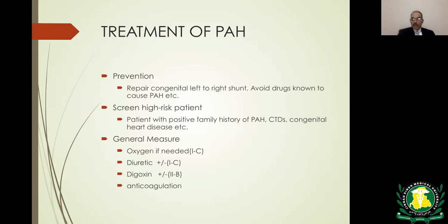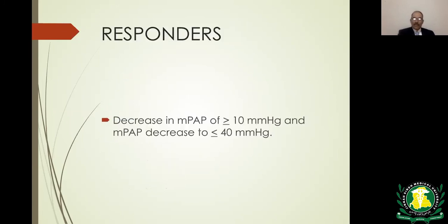General measures for PAH include supplemental oxygen if the patient is hypoxic, diuretics for peripheral edema, digoxin, and anticoagulation for responders. A vasodilator responder is defined as one who, when given an acute vasodilator challenge with nitric oxide, prostanoids, or adenosine, shows a decrease in mean pulmonary arterial pressure of 10 or more with a total pressure less than 40 — indicating likely response to calcium channel blockers.